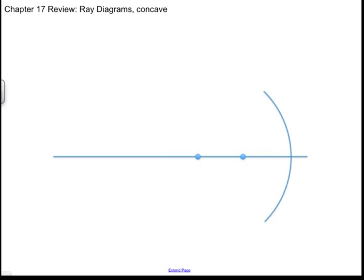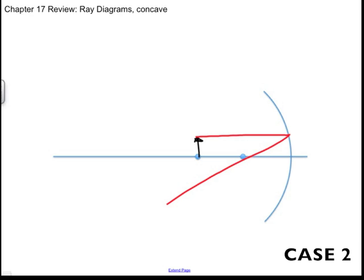Case 2: here's my object located at C. I draw two rays — first in parallel and out through the focal, then in through the focal and out parallel. The image formed is the exact same size, with a magnification of negative one because it's inverted, making it a real image. It is located at the same position as the object, so it's at C, the center of curvature.